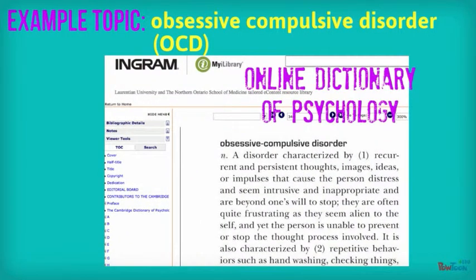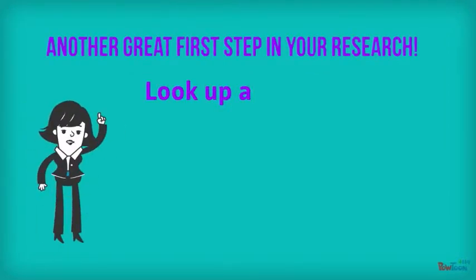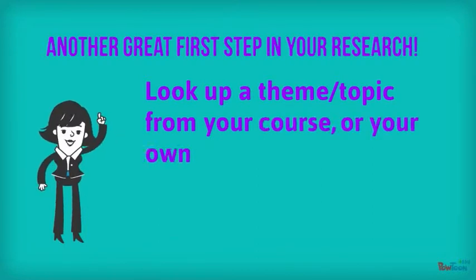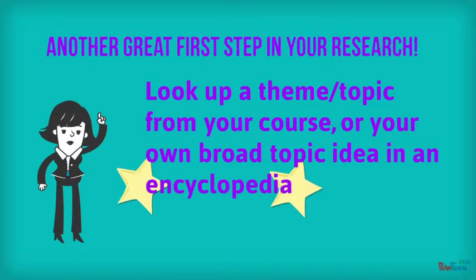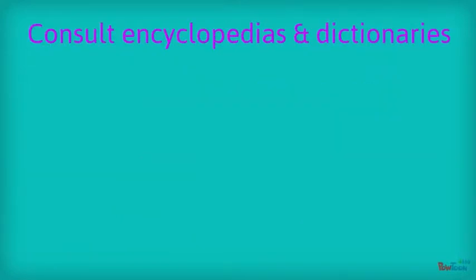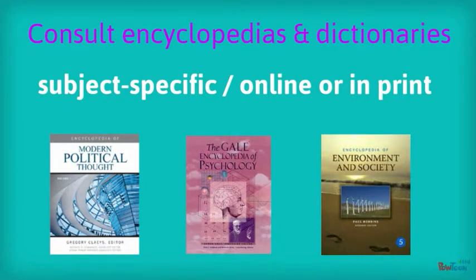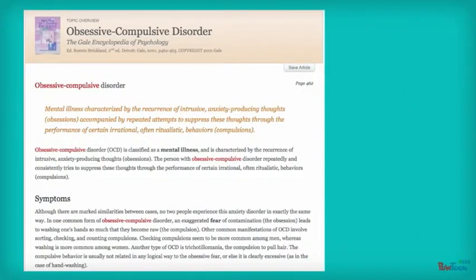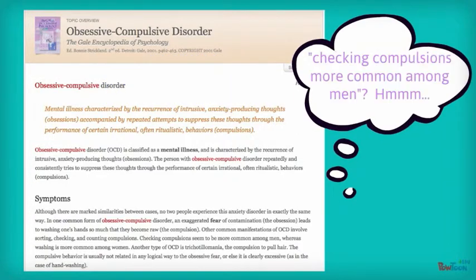Here's an online dictionary of psychology — you get the whole definition here. Another great first step is to look up a theme or topic from your course, or your own broad topic idea, in an encyclopedia. This will help you define your topic. The library has many print and online encyclopedias in a variety of disciplines. Here's an article from an online encyclopedia of psychology. If you read through this, you'll definitely get ideas for a topic.